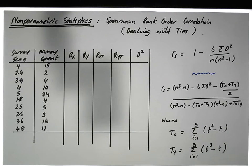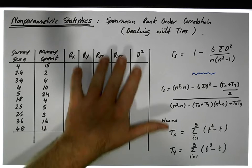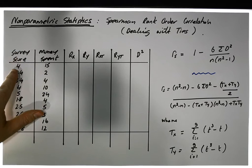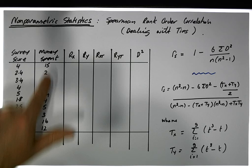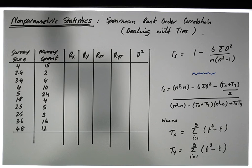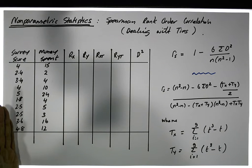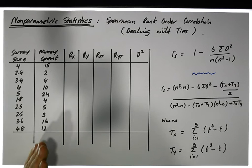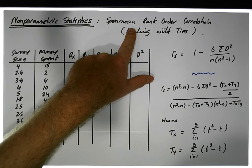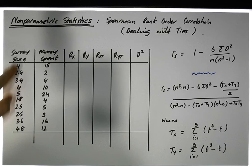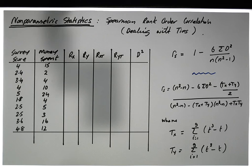Let's get to the example. We have a survey variable, which is an ordinal variable, and a money spent variable, which is a ratio variable. When we have one ordinal variable and one interval-ratio variable — or two ordinal variables — the appropriate correlation to use is the Spearman rank correlation. So we need to take the first variable and rank the values from smallest to largest.